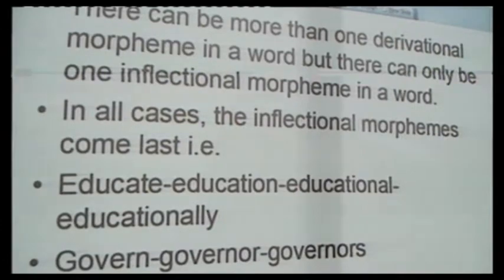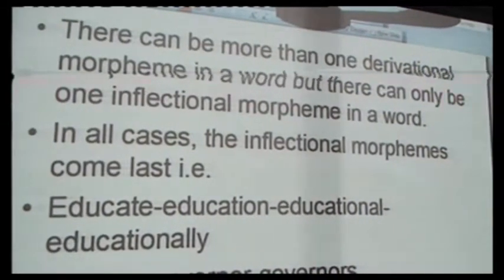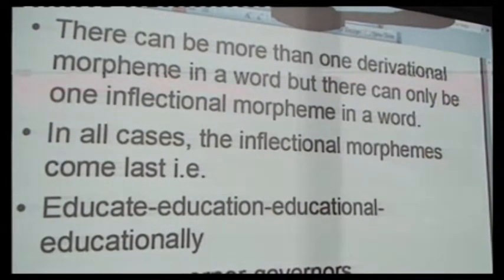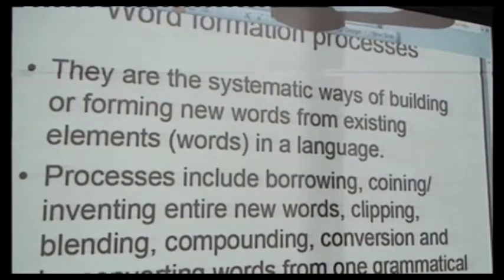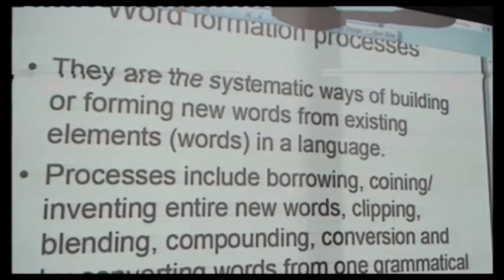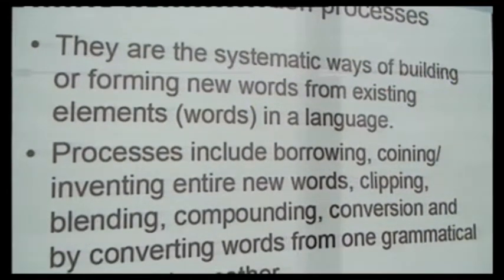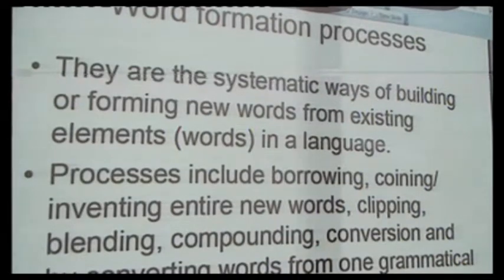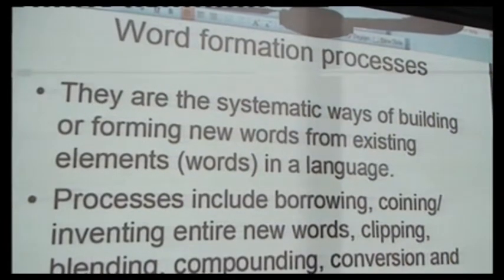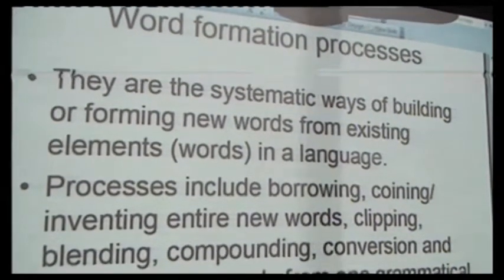In a particular word, you could have up to four morphemes — a free morpheme and more than one bound morpheme. You can have more than one derivational morpheme in a word, but you can have just one inflectional morpheme in a particular word, and the inflectional morpheme always comes last. Apart from morphemes, we can also focus on word formation processes — systematic ways in which words are formed from scratch or from existing words in any particular language. Because of the invention of the computer, new words are being formed every day in English.